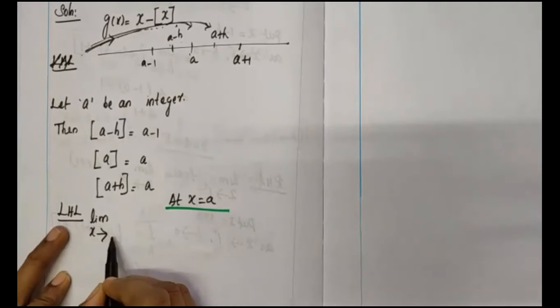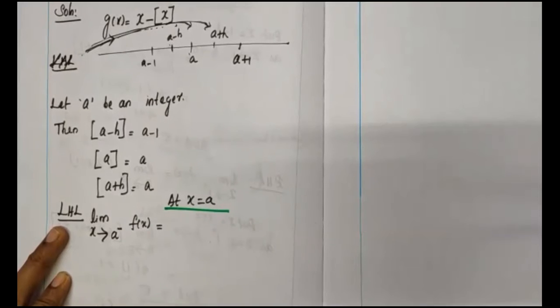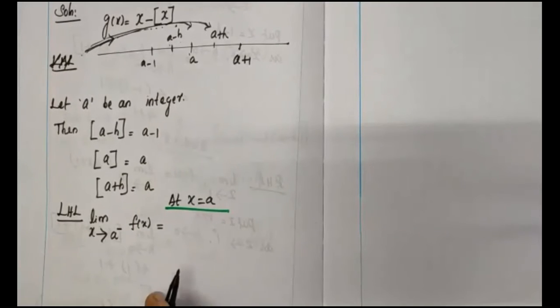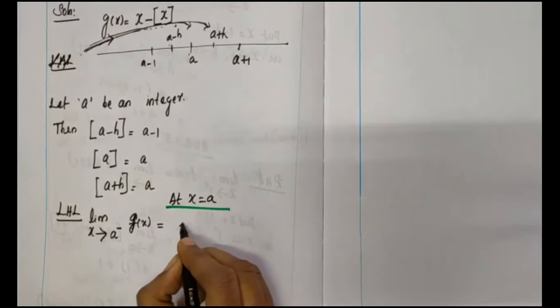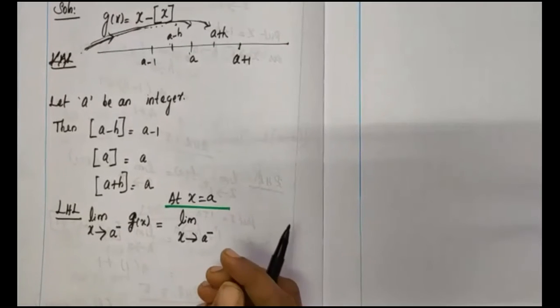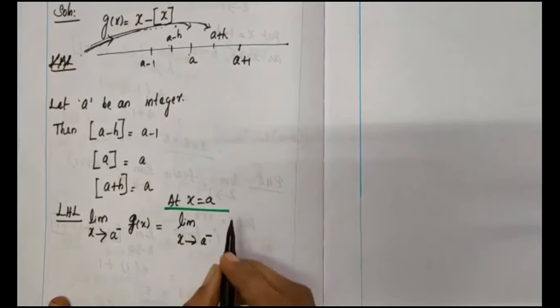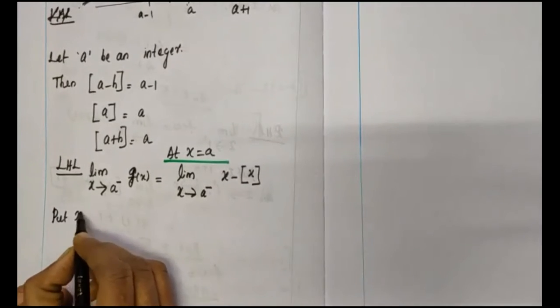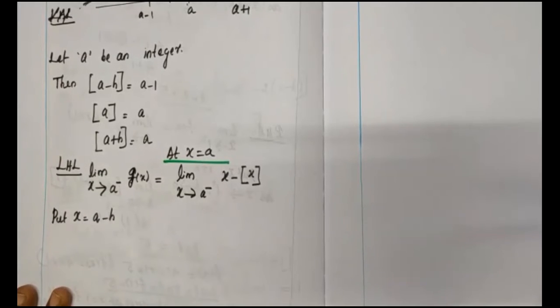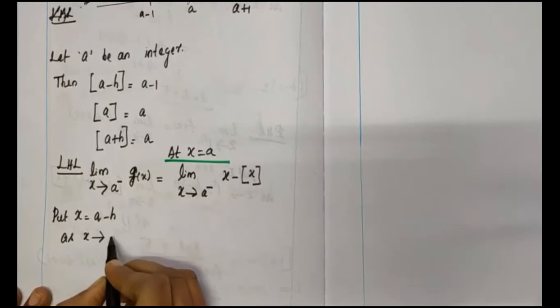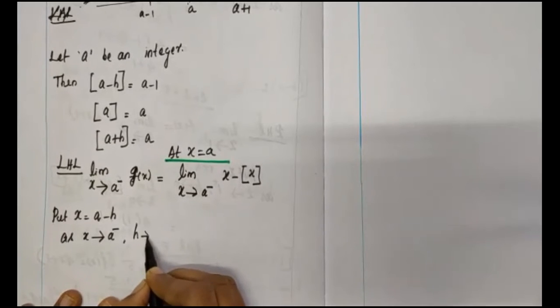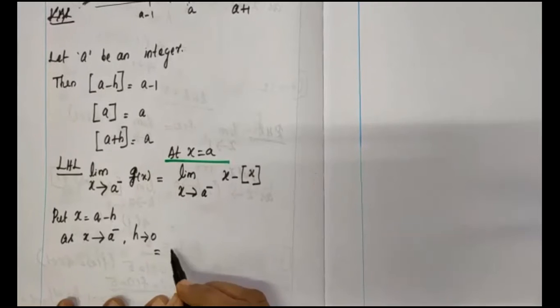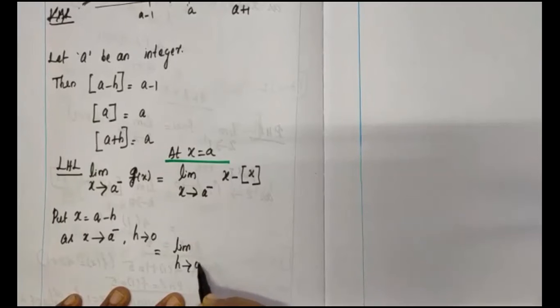Left-hand limit: limit as x tends to a minus of g of x. Since g of x equals x minus the greatest integer function of x, we substitute x equal to a minus h, where h tends to 0 as x tends to a from the left. So the left-hand limit becomes: limit as h tends to 0.